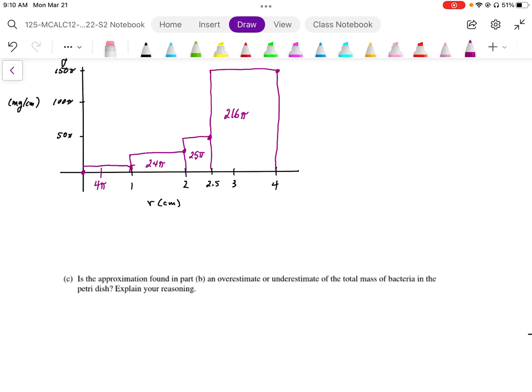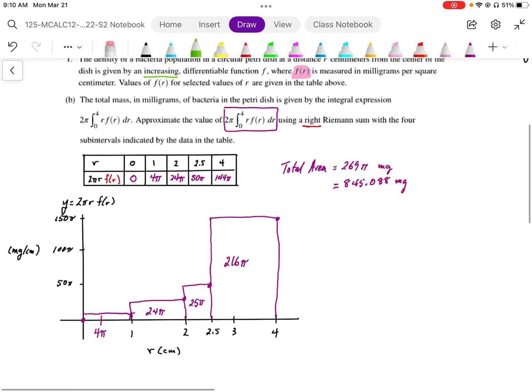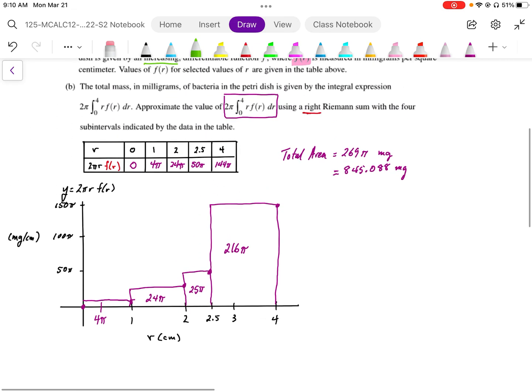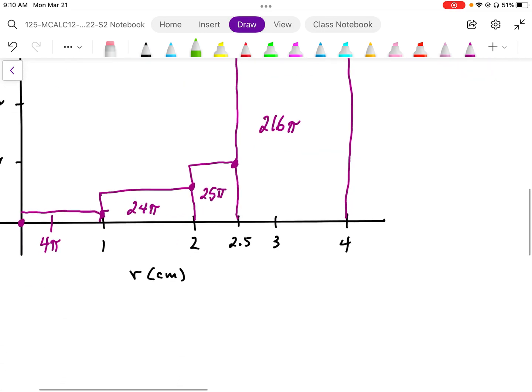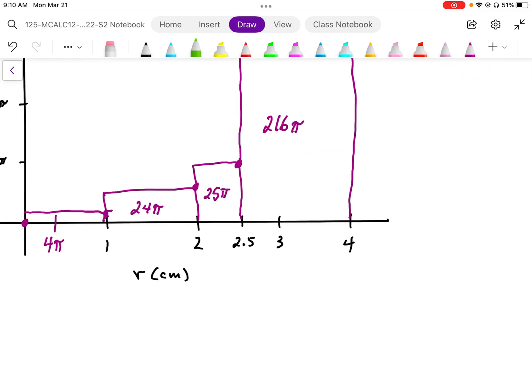If we take a look at this graph, it's important that this is an increasing function. So if this is an increasing function, we know that it's got to go up from here to here, from here to here.